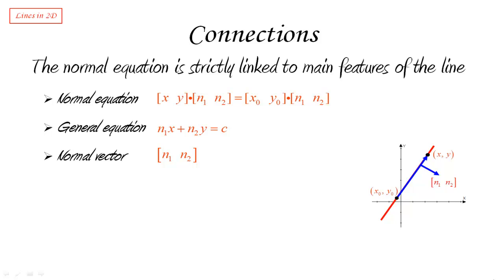consists exactly of the coefficients in the general equation. So if I give the general equation, just by copying things down, you should be able to obtain right away a vector which is normal to the line.